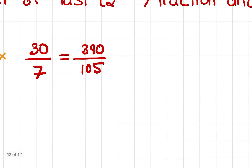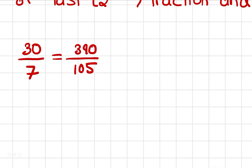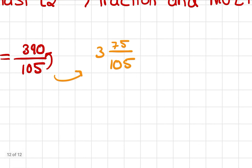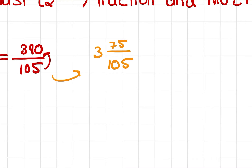We prefer the answer to be reduced and mixed. So we ask how many times does 105 go into 390, and find the remainder. In this case, 105 goes into 390 three whole times, with a remainder of 75 over 105. This fraction can be reduced a bit further, and our final reduced answer should be 3 and 5 over 7.